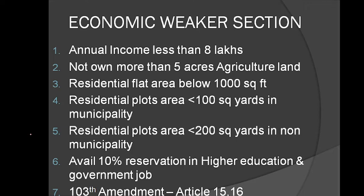The criteria for the Economic Weaker Section are: family income should be less than ₹8 lakhs per year; family-owned agricultural land should not be more than 5 acres; residential flat area should be below 1000 square feet; and residential plot area should be less than 100 square yards in a notified municipal area, or 200 square yards in a non-notified municipal area.